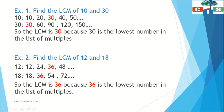Here we have found that the number 36 is present in both the multiples of 12 and the multiples of 18. So the number 36 is the LCM. The LCM is 36 because it is the lowest number present in both lists of multiples. There will be more common numbers, but the LCM is 36 because it is the lowest.